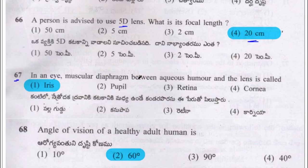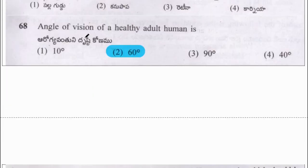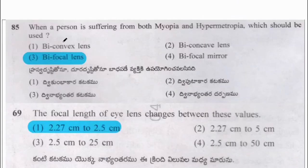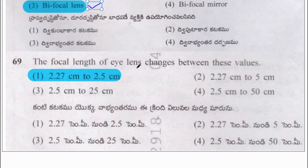In an eye, the muscular diaphragm between the aqueous humor and the lens is called the iris. The angle of vision for a healthy adult is 60 degrees. If a person is suffering from both myopia and hypermetropia, bifocal lenses should be used. The focal length of the eye lens changes from 2.27 cm to 2.5 cm.